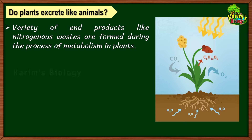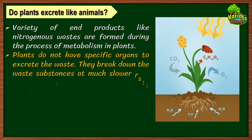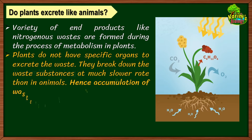Like animals, plants also perform metabolism, and as a result nitrogenous wastes are also formed in plants. They perform different life processes and metabolic waste is commonly found in plants. But how do plants excrete? Do they have any separate organs for excretion? No — generally plants do not have specific organs to excrete waste material.